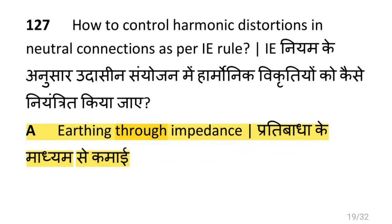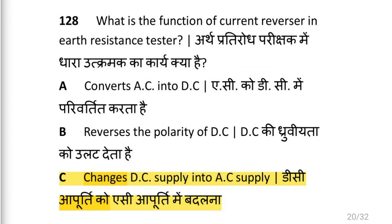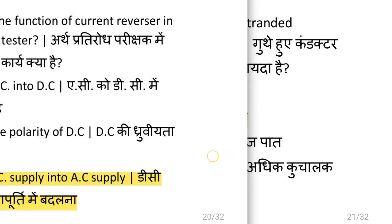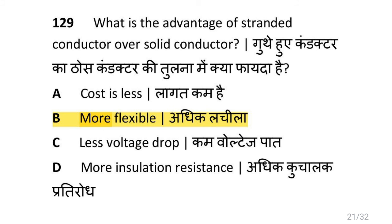How to control harmonics distortion in neutral connection as per IE rule? Earthing through impedance. What is the function of current reverser in earth resistance tester? It changes DC supply into AC supply. What is the advantage of standard conductor over solid conductor? That is more flexible.